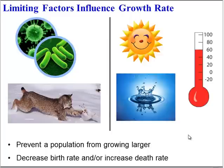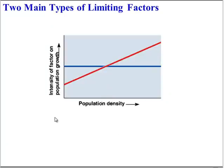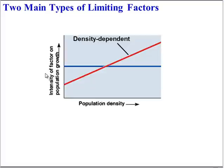We can divide limiting factors into two different types. Some limiting factors are density dependent. Looking at this graph, our independent variable is the density of the population — how crowded it is. Our dependent variable on the y-axis is the intensity of the limiting factor, or how strongly it is affecting the population. Density-dependent factors depend on the density: if the population is uncrowded, the factor doesn't have much effect, but if the population is super crowded, the factor is going to have a major impact.